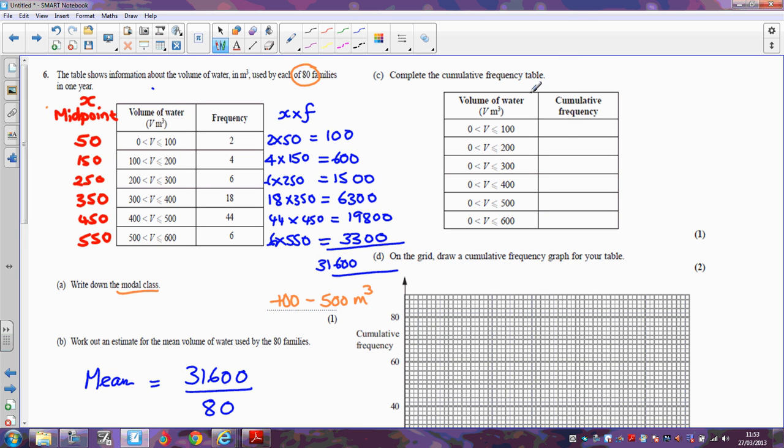Next question part is cumulative frequency graph, so we're trying to work out how many families, first of all, used between 0 and 100, well we can see that that's 2. How many families used between 0 and 200, well that's adding these two together, so that's 6. Next we're going to add on, so less than 300 comes out as 12. Less than 400 is the 12 plus the 18, which comes out as 30. Then 30 plus 44, which is 74, and this should be 80. And that agrees with the total number of families, so we can see that we're on the right line.